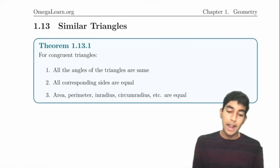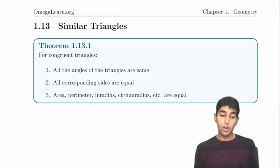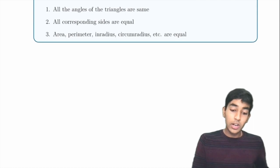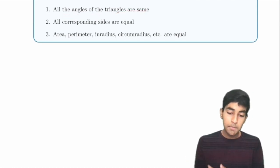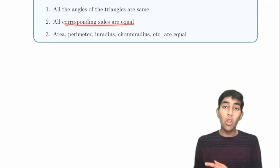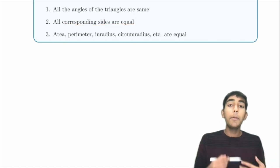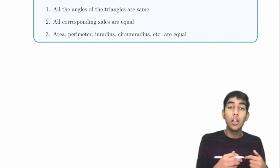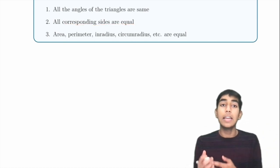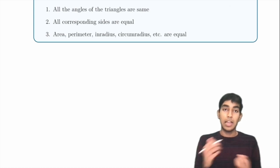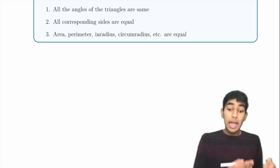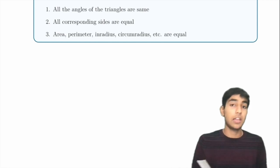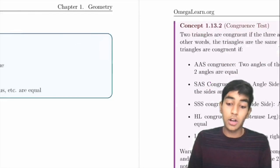Next, congruent triangles. For congruent triangles, all angles are the same, all sides are equal, and all properties — height, circum-radius, in-radius, area, perimeter — are also the same.